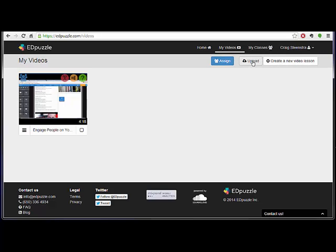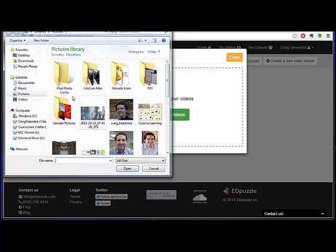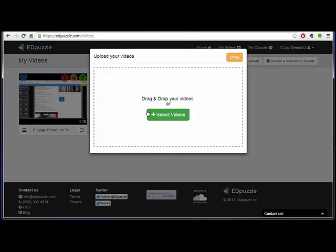So a couple of different options. You can upload an existing video if you have a file on your computer. You can choose Upload and then select the videos from wherever they may be stored on your computer. Or if you have them on your desktop, you can just drag them and drop them right on there.